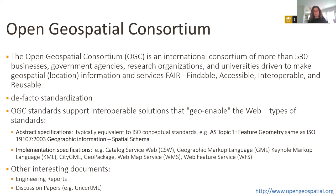Two other interesting document types at OGC's website are worth following: engineering reports, which report results of the innovation program where new standards are developed or existing standards are implemented; and discussion papers, which bring topics that are hot outside the spatial data domain and try to assess what they mean within it. One example is the discussion paper on UncertML, which was a proposal to define metrics to mark up uncertainty measures as an expression of spatial variation in objects.